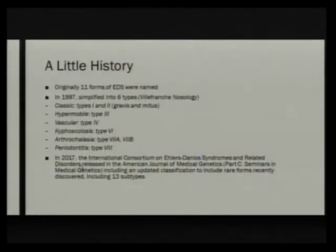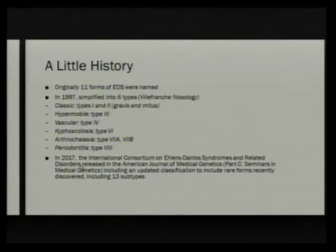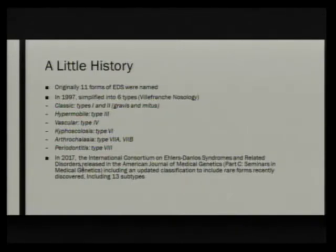Originally there were 11 forms of Ehlers-Danlos that were named, and then in 1997 they simplified it into six types — classic, hypermobile, and vascular were the common types, and the bottom three were the rare types. In 2017, the International Consortium of Ehlers-Danlos Syndromes and Related Disorders released a series of papers that reclassified all of these syndromes into different subtypes, basing it mainly on the molecular problems.